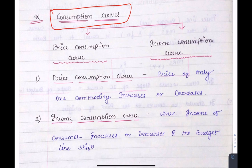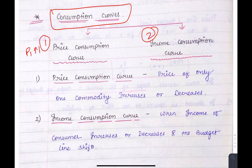Now we come to consumption curves, which are of two types: first, the Price Consumption Curve (PCC), and second, the Income Consumption Curve (ICC). In the price consumption curve, we change the price of one commodity — increasing or decreasing it — while keeping the other commodity's price constant and income also constant. In the income consumption curve, prices are kept constant but income is increased or decreased.